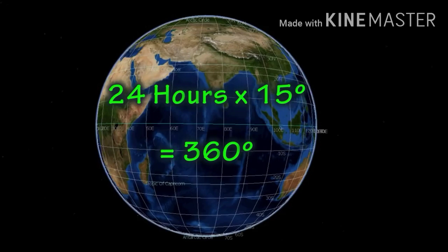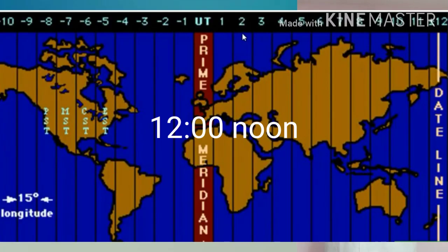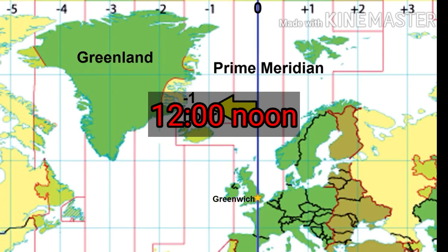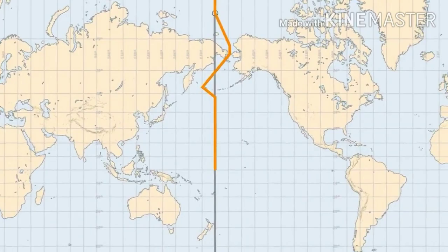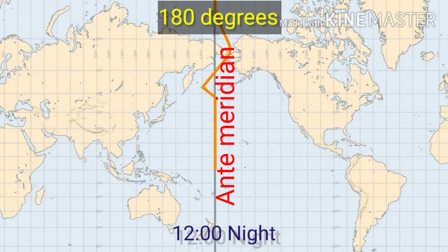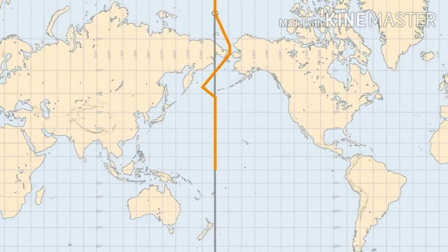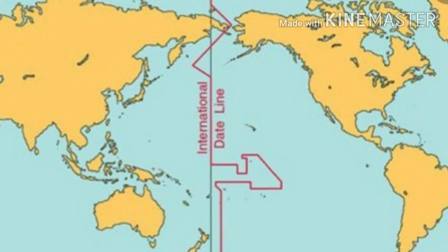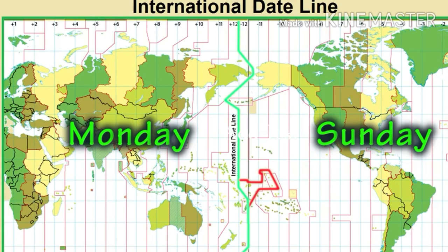When the time is 12 noon at the Greenwich line, it is 12 midnight at the opposite longitude — the anti-meridian. Anti-meridian means the opposite meridian, and 180 degrees of longitude is called the international date line. The date changes when we go from west to east or east to west, which is why it is called the international date line.